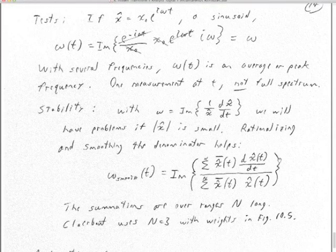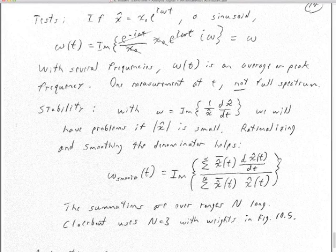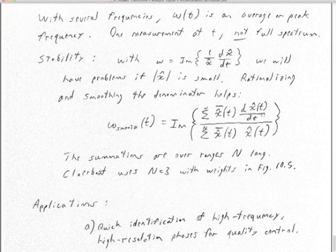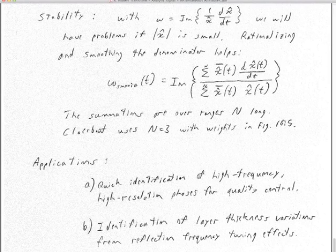Our data contain a whole spectrum of frequencies, so the instantaneous frequency gives us an average or peak frequency — it's really one measurement, not a full spectrum. You can also do a moving window spectrum to get the whole frequency spectrum at every time. But the instantaneous frequency is just one frequency number at each time. When calculating frequency, you often get to set a window parameter — you decide how many time points to smooth over, which could be one second or five milliseconds depending on your data set.